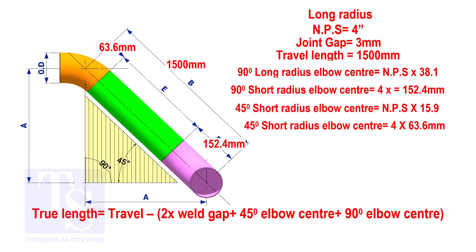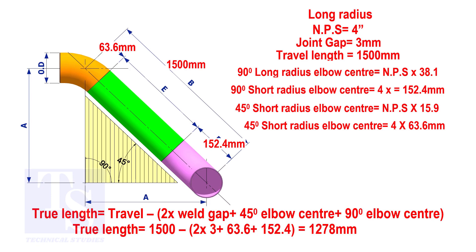Apply the calculation. The true length of the pipe is 1,278 millimeters. Thank you for watching.